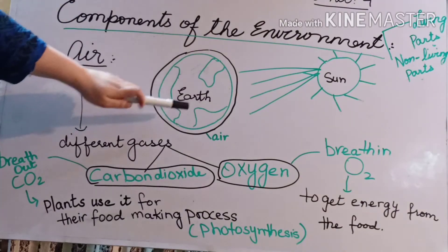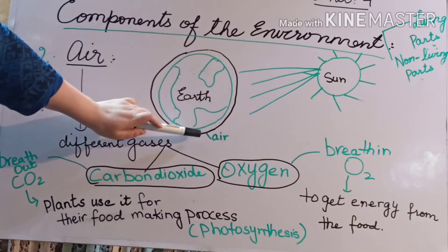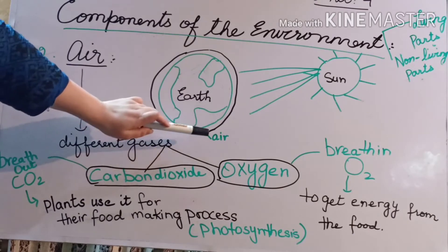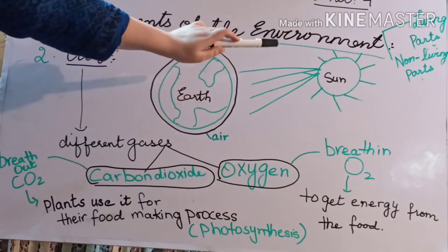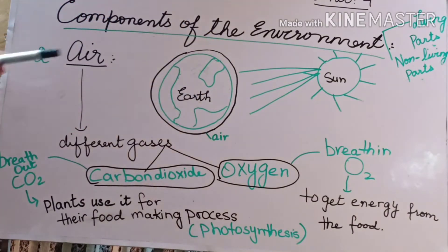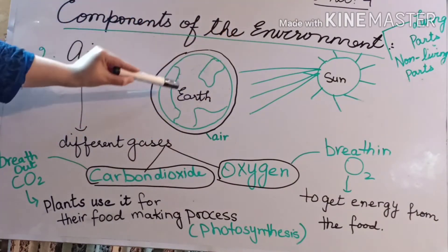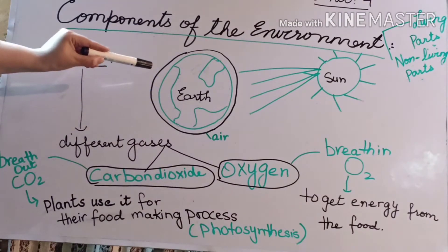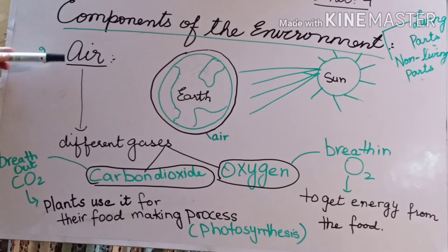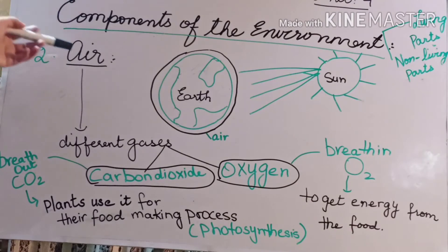Now we are going to discuss the second non-living component of the environment: air. If you look at the earth, there is a blanket or a layer around it. This blanket or layer is known as air. It helps protect the earth against harmful radiations or harmful rays directly reaching the earth. If there is no layer of air present, the rays will directly reach the earth and increase its temperature.